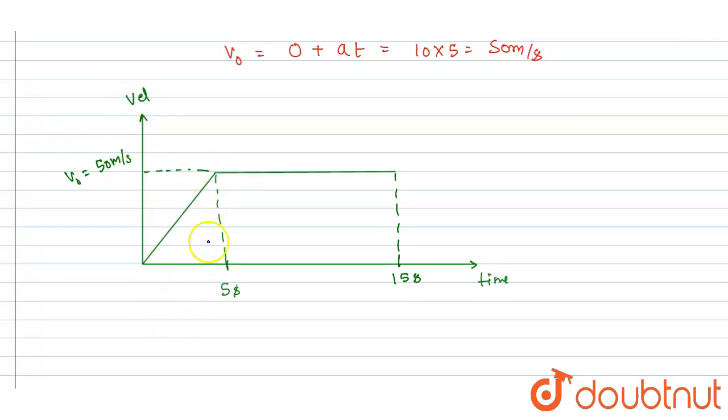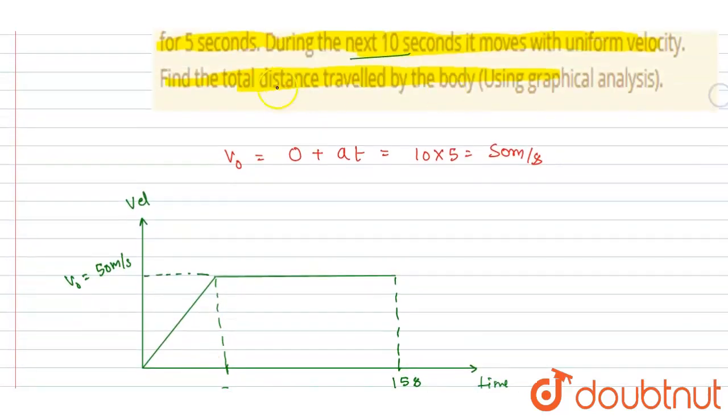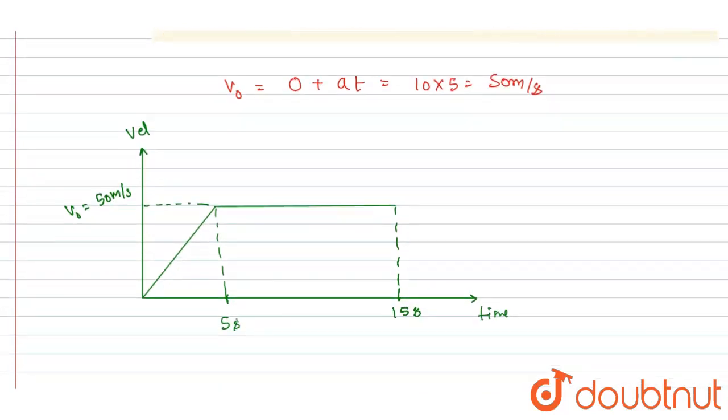You can get the area under the curve. Since we want the total distance traveled by the body, and velocity is always positive, it is not changing its direction, so distance and displacement here will be the same. So you can get the area of this.